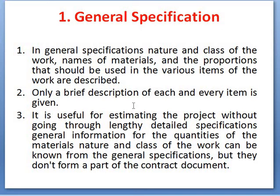General specifications are useful for estimating the project in a short period of time. We can find out the materials required, nature of work, class of work, and proportions. With the help of these four things, we can find out the cost of any structure quickly. Therefore general specification plays an important role when we have to calculate the cost of any structure in a short period of time.